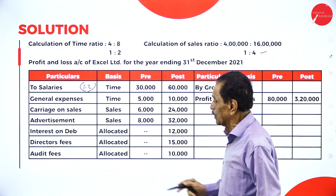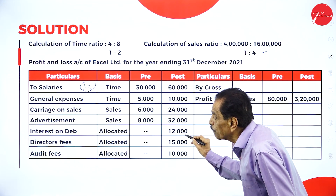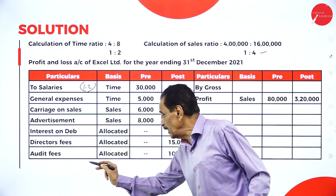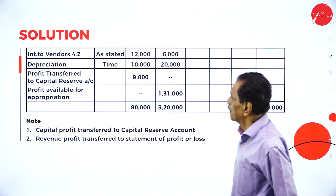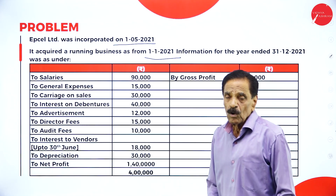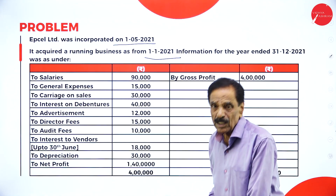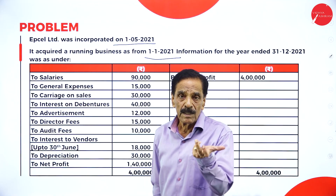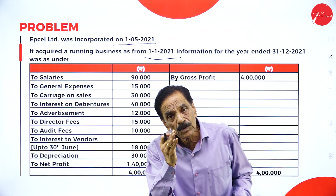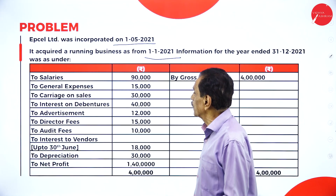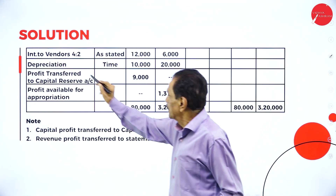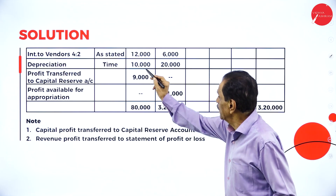Interest on debenture is allocated directly to the post-incorporation period. Director fees are directly allocated to post-incorporation. Audit fees are also allocated directly to post-incorporation. For interest to vendor: the problem states up to 30th June is six months. The first four months is pre-incorporation and the remaining two months is post-incorporation, so the ratio is 4 to 2. Total interest to vendor is 18,000, so 12,000 goes to pre-incorporation and 6,000 to post-incorporation.